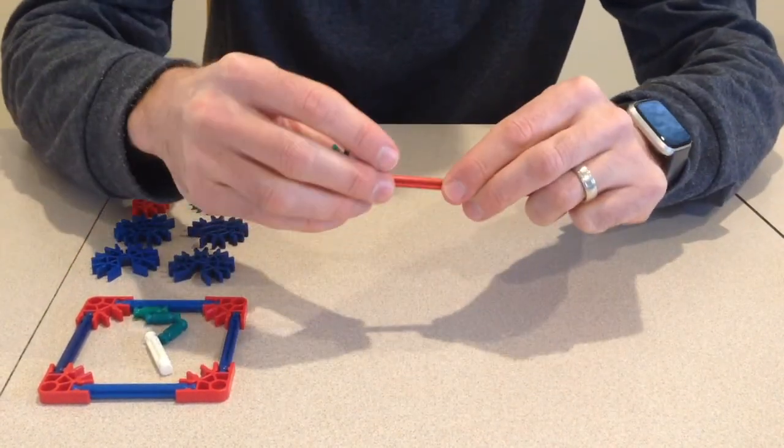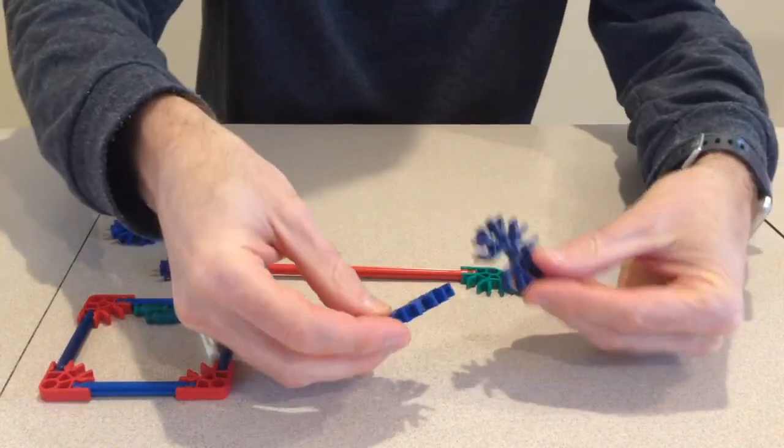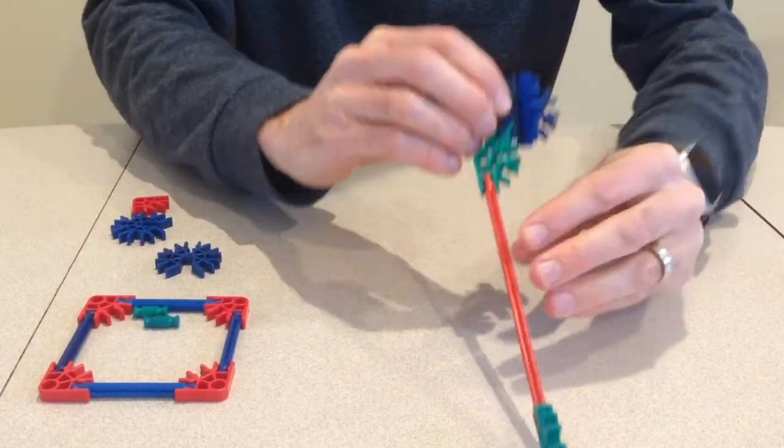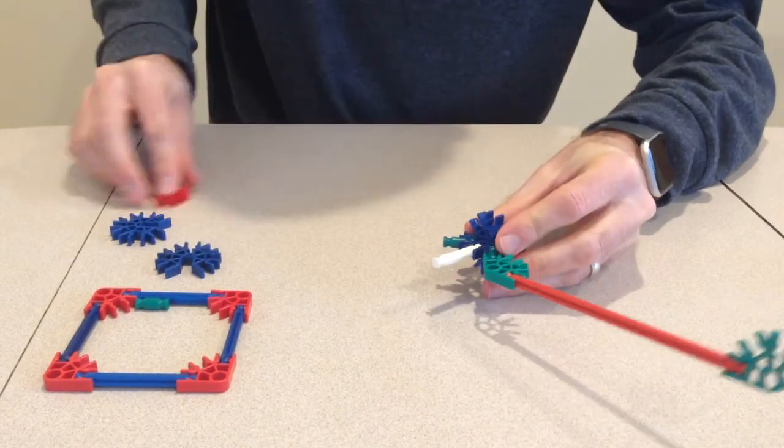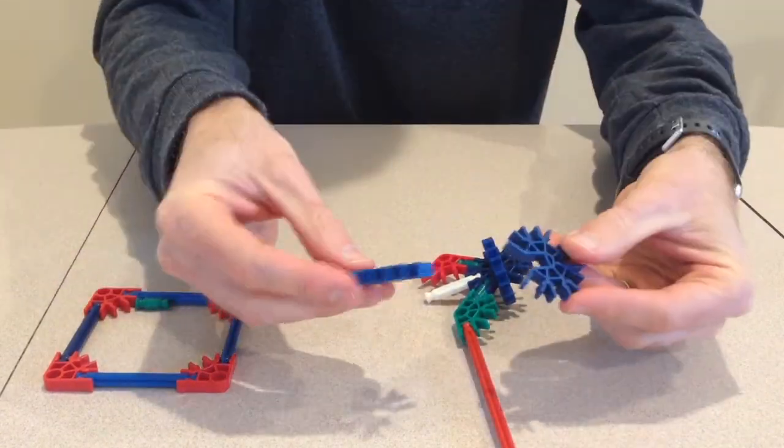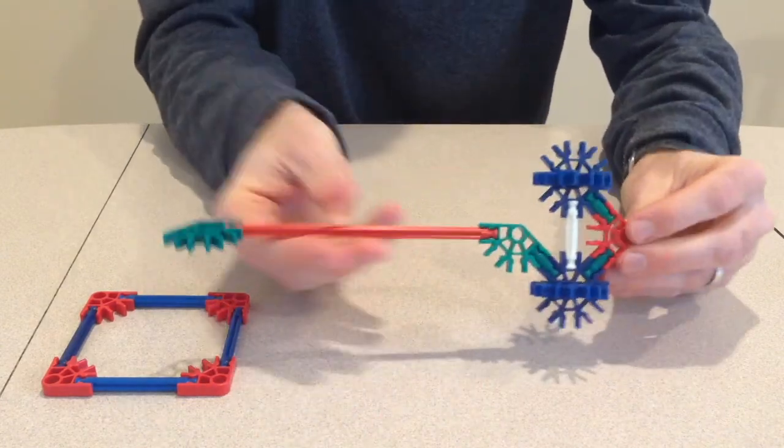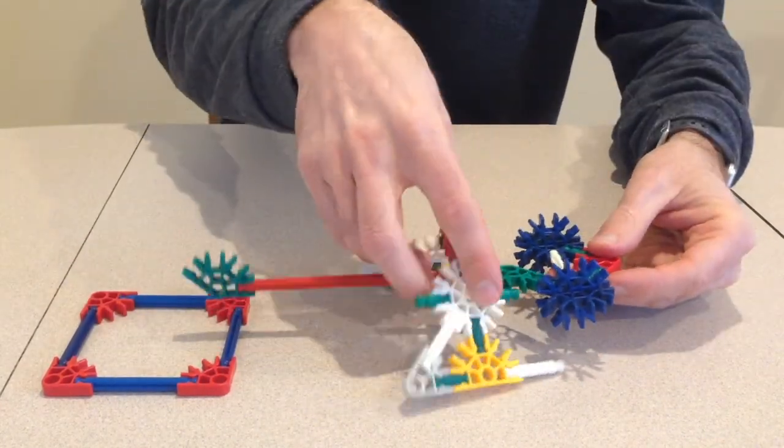Next, I'll make the tail boom and then the bottom of the helicopter. Once completed, this piece can be attached to the landing skids.